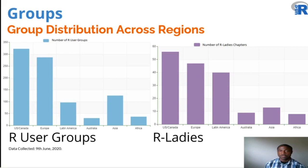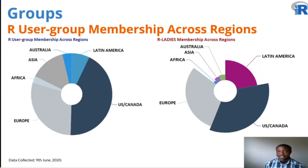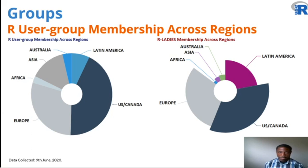We see that more clearly in these bar charts. On the left, when we look at R user groups, notice Latin America around the center, and the relatively greater height that it has for R Ladies chapters on the right. Asia appears to be underrepresented with respect to R Ladies chapters relative to other regions and continents. These pie charts show the same data in a different way — the pie chart on the left shows Latin America with a smaller slice than what we see in R Ladies membership on the right.